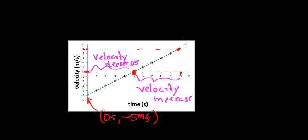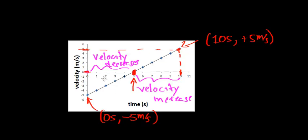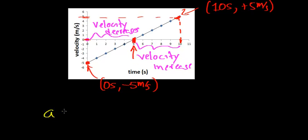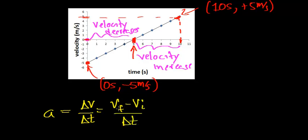We can pick out some points here. I'm going to pick out this point right here, which corresponds to time t equals ten seconds and a velocity of positive five meters per second. I can calculate the acceleration of this graph using any two points along this line. In this video I'd like to show you an alternative way using just the two endpoints. To calculate the acceleration, I'll rely on my definition: acceleration is a change in velocity per change in time — that is, final velocity minus initial velocity divided by the time it takes to change this velocity.